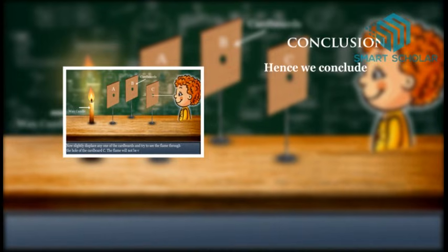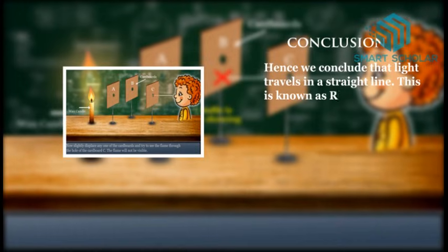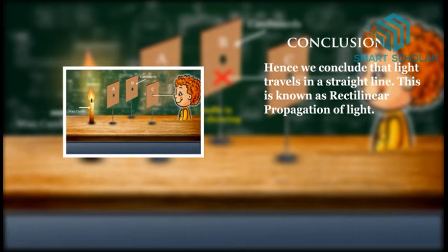Hence we conclude that light travels in a straight line. This is known as Rectilinear Propagation of Light.